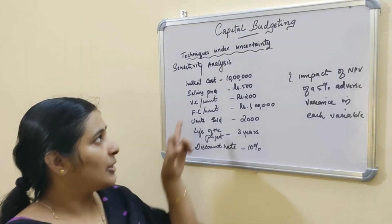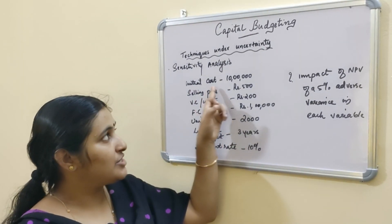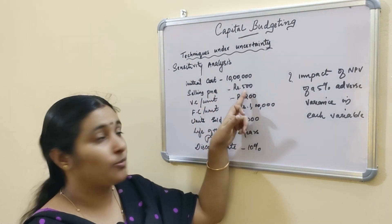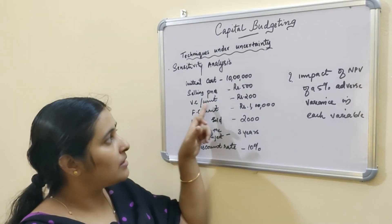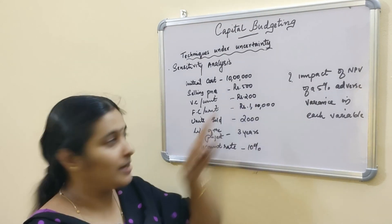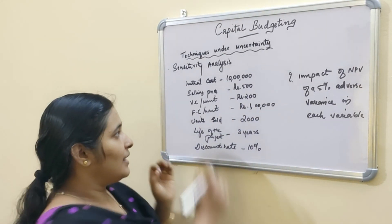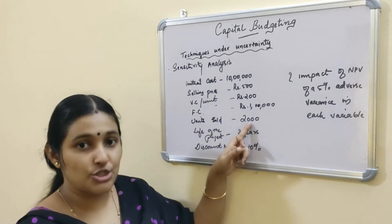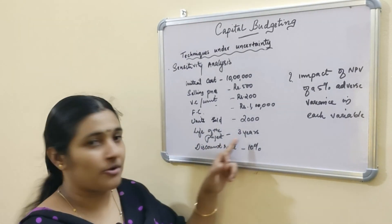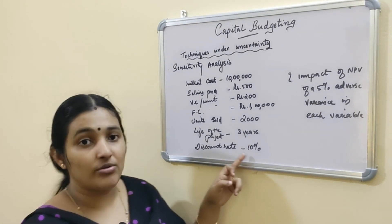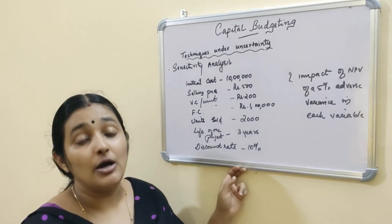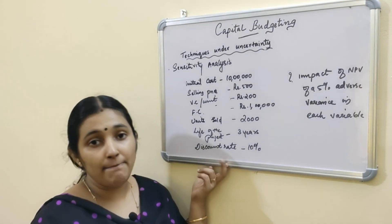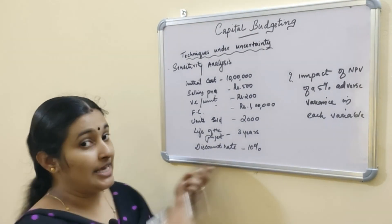Now let's look at an example. The initial cost of investment is Rs. 10 lakh. Selling price per unit is Rs. 500. Variable cost per unit is Rs. 200. Fixed cost is Rs. 1 lakh — that is not per unit. Number of units sold is 2,000. Life of the project is 3 years. Discount rate is 10%. The question is: what will be the impact on NPV of a 5% adverse variance in each variable?